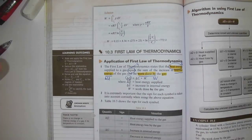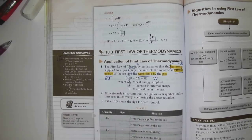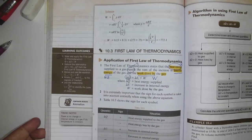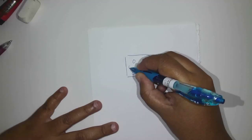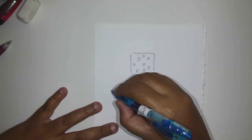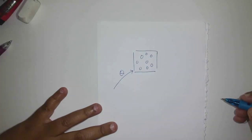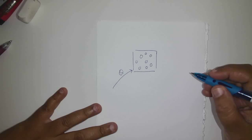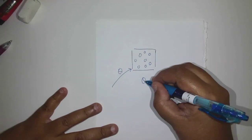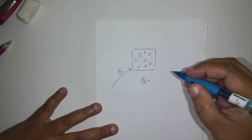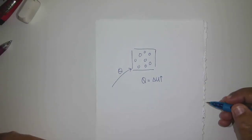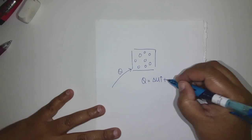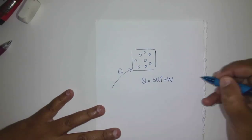Why is it delta Q? Because there is prior heat energy already inside the gas, so you are supplying another delta Q. If you have a container filled with gas molecules and you supply heat energy Q, what the gas will do is use that heat energy — some of it will be used to increase its internal energy, and some will be used to do work.